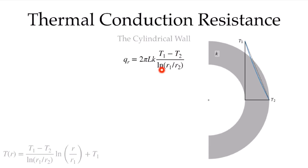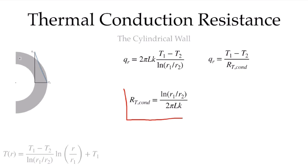Here is our thermal resistance. It's ln(r1/r2) / (2πLk). Now if we have cylindrical walls or composite cylindrical walls, we can use this to solve these systems. We'll see that in subsequent videos.